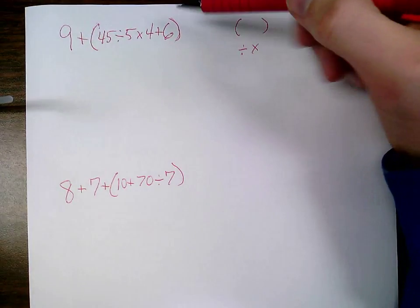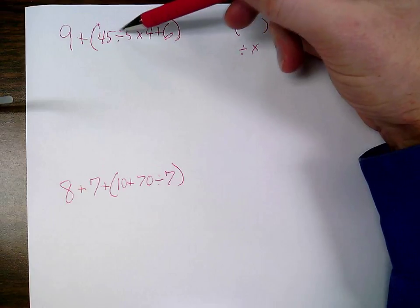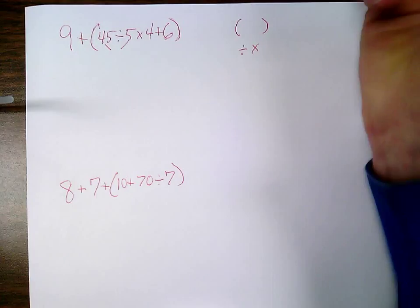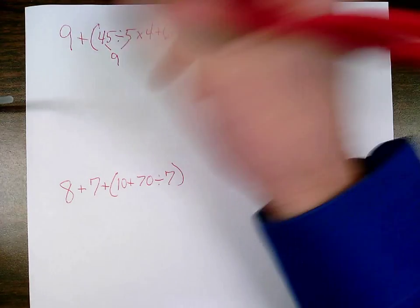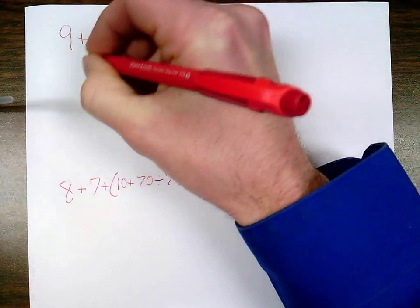Inside these parentheses I look and see the very first thing here: 45 divided by 5. I can do that. 45 divided by 5 equals 9. I bring that answer down and bring down everything else from the problem.